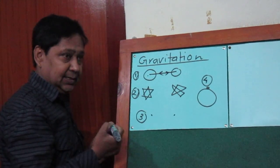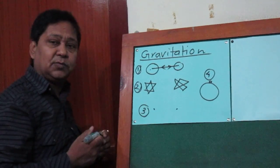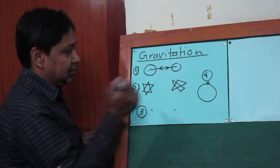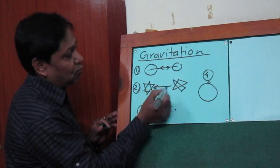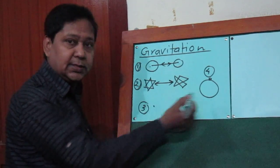In the same way, this star attracts another star towards its center. In the same way, the second star also attracts the first star towards its center.